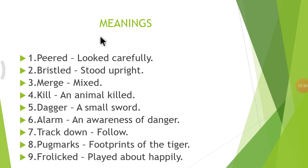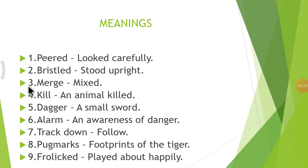The next topic is Meanings. Number 1: Peered — Looked Carefully. Number 2: Bristled — Stood Upright. Number 3: Merge — Mixed. Number 4: Kill — An Animal Killed. Number 5: Dagger — A Small Sword.